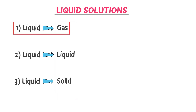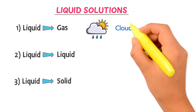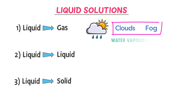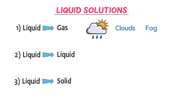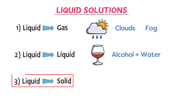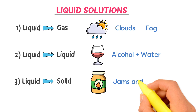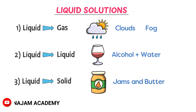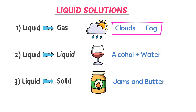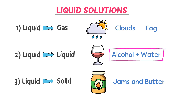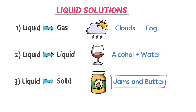The example of a liquid in gas solution is cloud or fog — clouds are water vapors in air. The example of a liquid in liquid solution is alcohol dissolved in water. The example of a liquid in solid solution is jams, butter, or cheese. So, cloud and fog have liquid dissolved in gas, alcohol and water have liquid dissolved in liquid, while jams and butter have liquid dissolved in solid.